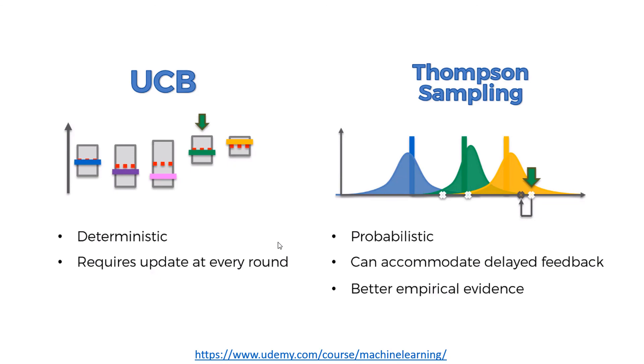That's the difference between UCB and Thompson Sampling. One is deterministic, another is probabilistic. As a consequence, if you try to update frequently in UCB, it's going to be quite computationally expensive. It's also expensive to do the same in Thompson Sampling, however, if you delay the feedback, you won't have such drastic consequences compared to UCB. Furthermore, Thompson Sampling also has better empirical evidence. That's it. Bye-bye.